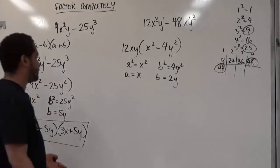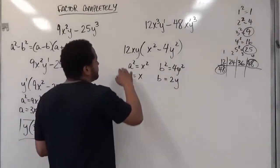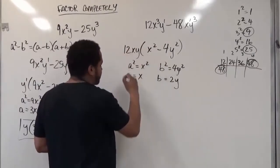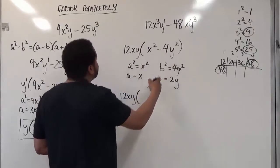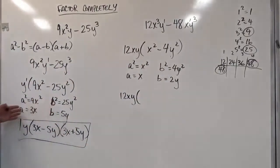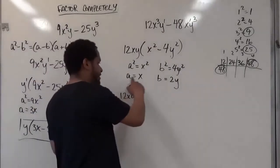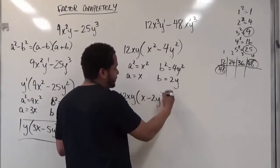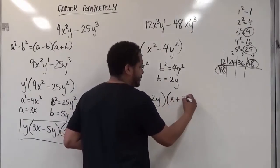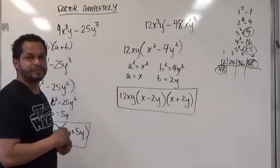Now to finish this factoring step, I'm going to bring down my 12xy which are factored out, the greatest common factor here. I'm going to break down the rest of this using what I used before, with my a's and my b's and my perfect square, the difference of two squares formula. I know I'm going to have a minus b, which is x take away 2y, and then a plus b, which is going to give me x plus 2y. That takes care of our factoring completely problem. Thank you.